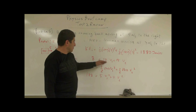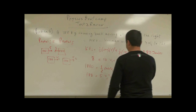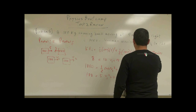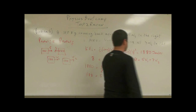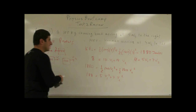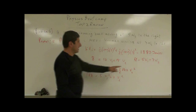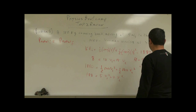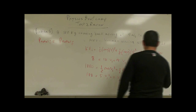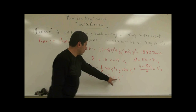Dividing the momentum equation by 2 gives 4 = 5v₁ + 7v₂. Solving for v₂: v₂ = (4 − 5v₁) / 7. We substitute this expression for v₂ into the kinetic energy equation to get a single equation in v₁.